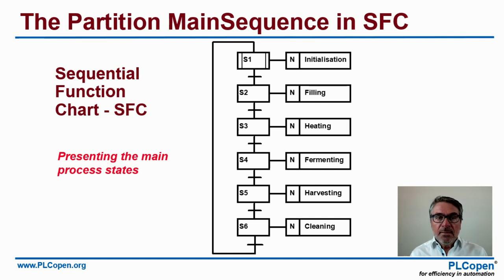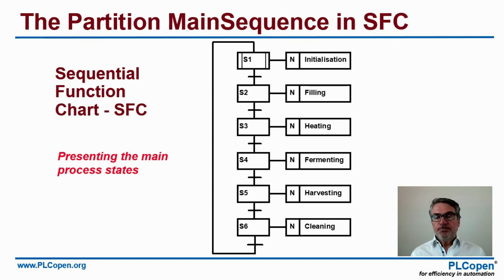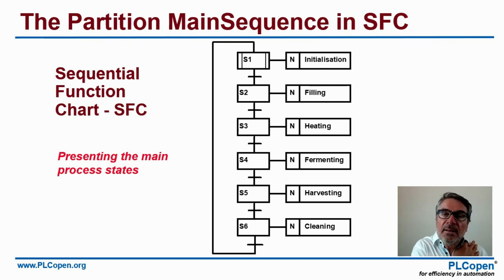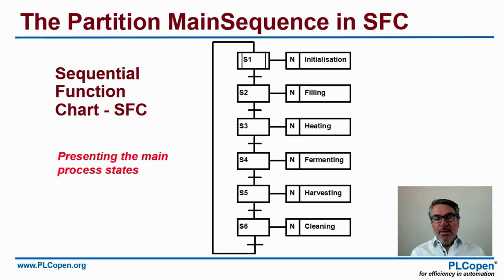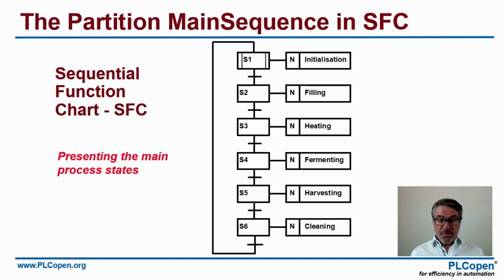Zooming into the main sequence and representing it in a Sequential Function Chart, we see S1 as the initial step, coupled to an initialization action block. When certain conditions are fulfilled, we go to S2 where we do filling. After reaching a certain level, we go to S3 where the heating process starts. When a certain temperature is reached, the fermentation process starts in S4.